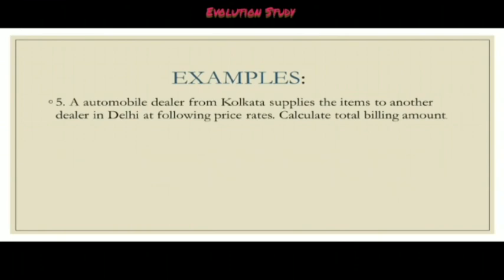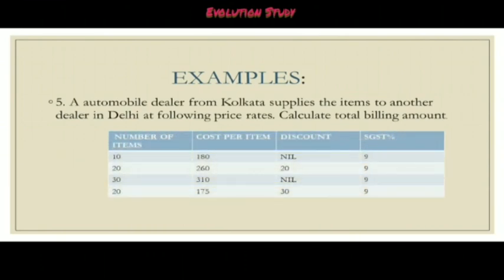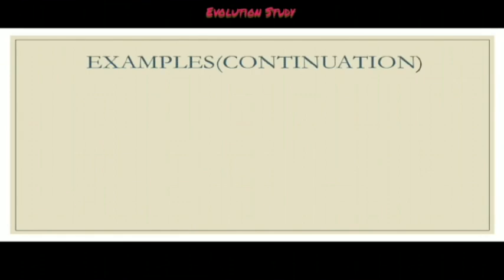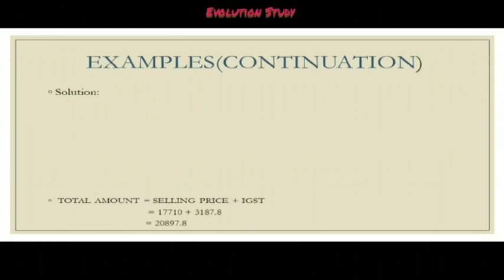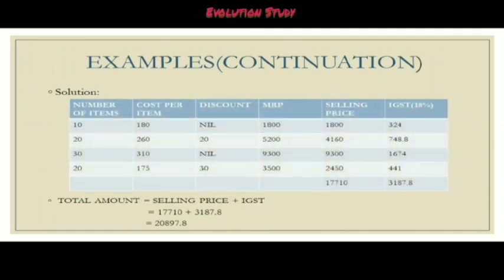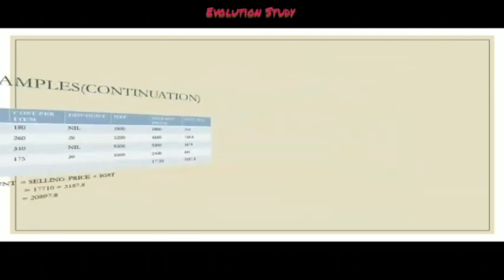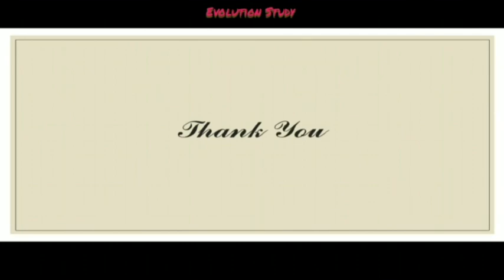Another example says an automobile dealer from Kolkata supplies items to another dealer in Delhi at the following price rates — calculate the total billing amount. The total amount equals the selling price plus the IGST, which means 17710 plus 3187.8, which comes to rupees 20897.8. I hope this chapter of GST is clear to you all. Thank you.